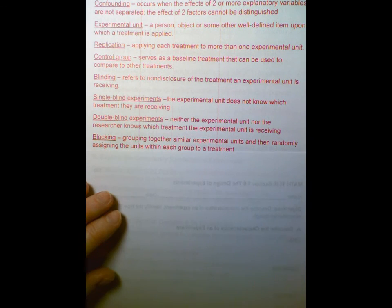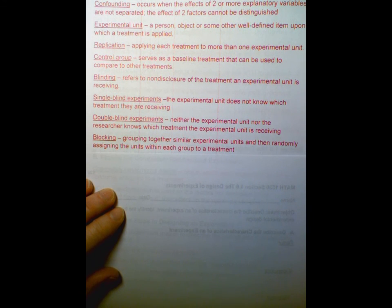And finally, blocking. That's where you're grouping together similar experimental units, and then randomly assigning the units within each group to treatment. So like men and women or something like that. Similar units, these are the men, these are the women. And then randomly within the women, some get treatment, some don't. Within the men, some get treatment, some don't. That's blocking.